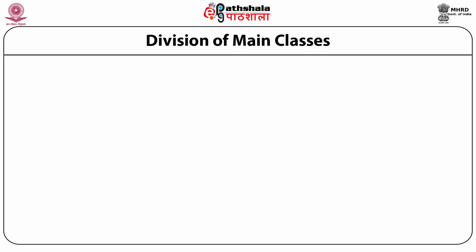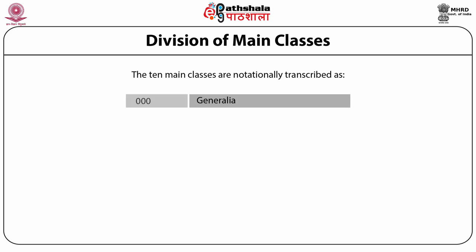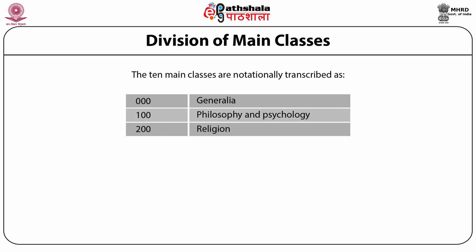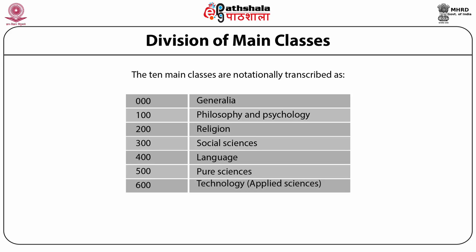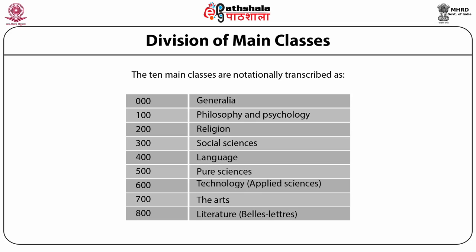The DDC has been divided at the first instance into ten main classes, denoted by decimal notation each containing three digits. The first main class is 000, general works and subjects. Then 100 is philosophy and psychology. 200 is religions of the world. 300 is social sciences. 400 is languages, linguistics and philology. 500 is pure sciences or natural sciences. 600 is technology or applied sciences. 700 is arts. 800 is literature of all the world in all languages. 900 is a compound class having geography, biography and history of the world. The ten main classes are known as the first summary.